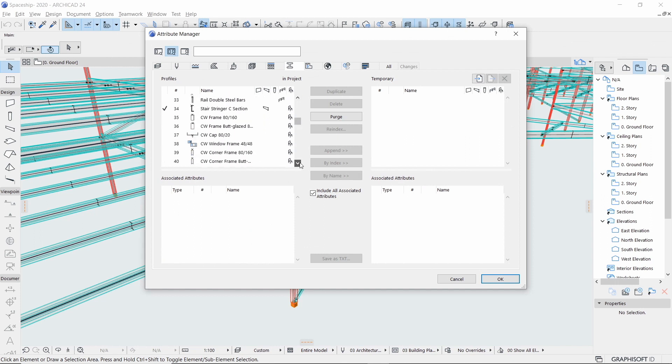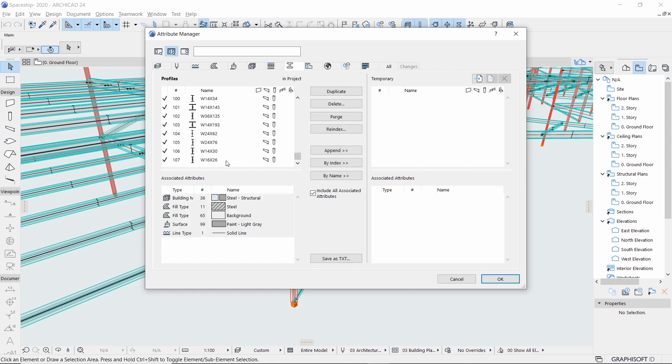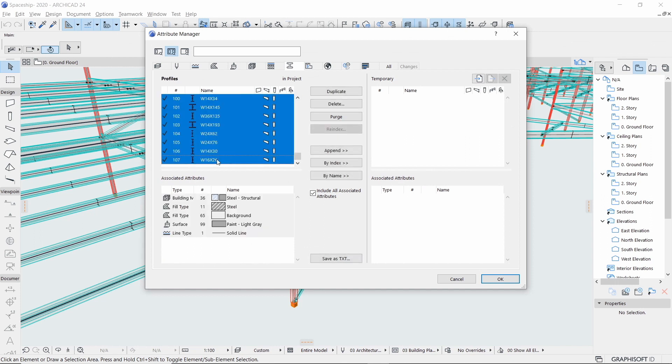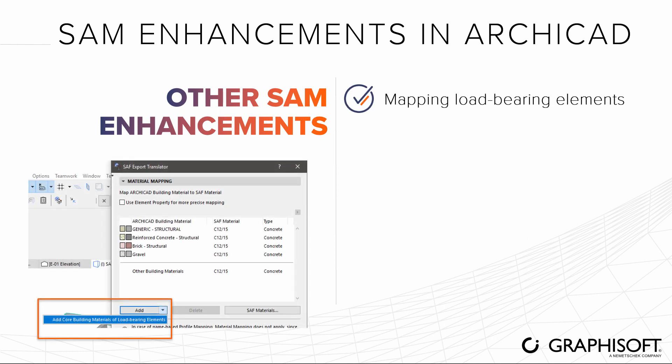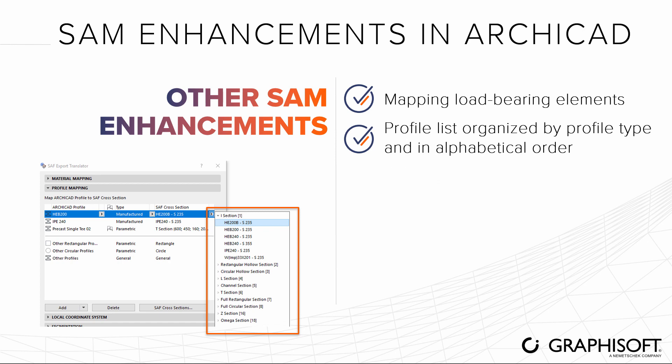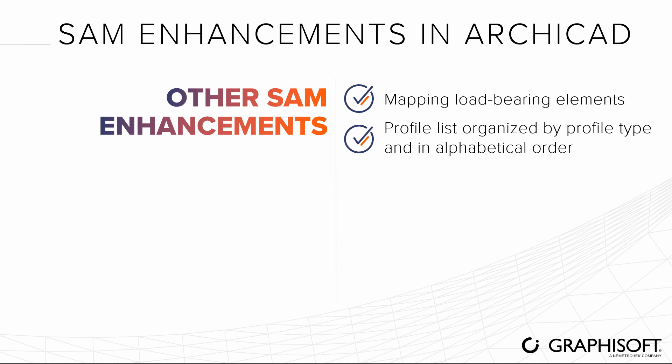Populate the material mapping list with one click during SAF export. Use the Add Core Building Materials of Load-Bearing Elements command to add all used materials of the project's load-bearing elements with a structural member. Finding cross-sections in the SAF export translator pop-up list is easier, sorted by form code in alphabetical order.